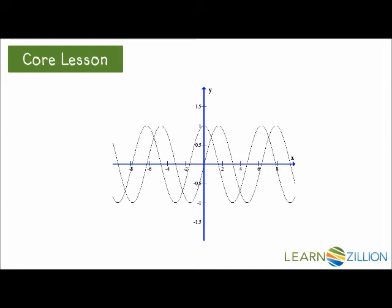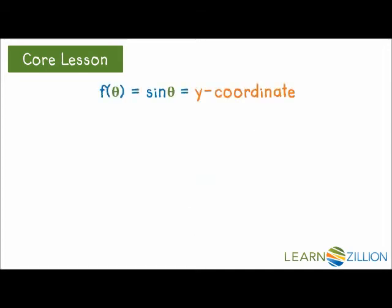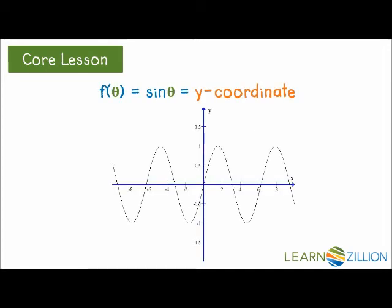Now, one more thing. We don't usually use theta or t for the name of the independent variable in a function, so we need to fix that. We normally name the independent variable x, and hence the horizontal axis is usually labeled x. So in this case, we are naming the angle x, not theta. So let's change theta into an x in our sine function.